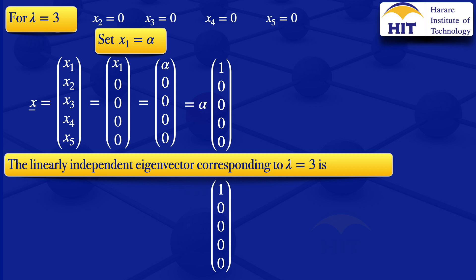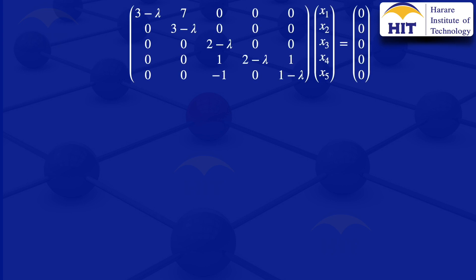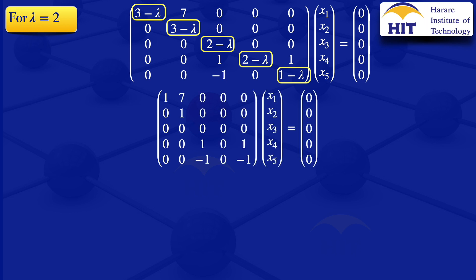We are done for the eigenvector corresponding to lambda equals 3. We now move on to the next eigenvalue, going back to our equation A minus lambda I_n multiplied by x equals 0. We are now working for lambda equals 2. Substituting 2 wherever we have lambda: 3 minus 2 gives 1, another 3 minus 2 gives 1, 2 minus 2 gives 0, 2 minus 2 gives 0, and 1 minus 2 gives minus 1. Our matrix therefore becomes: 1, 7, 0, 0, 0 / 0, 0, 1, 0, 0 / 0, 0, 0, 0, 0 / 0, 0, 1, 0, 1 / 0, 0, 0, 1, 0 — multiplied by the column vector equal to the zero vector.